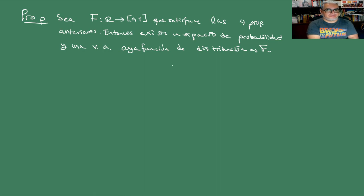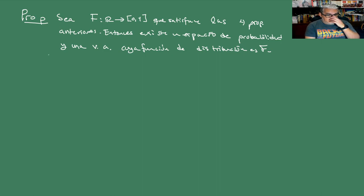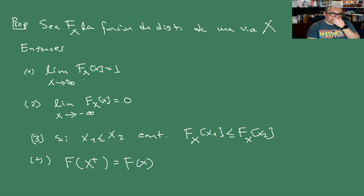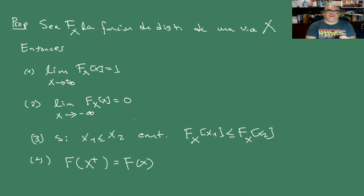¿Cómo haríamos la prueba de esto? Quiero hacer rápido esta observación: si tenemos estas cuatro propiedades, tomando los límites, ¿cómo construimos la variable aleatoria? Podemos construir la variable aleatoria a partir de la F. ¿Cómo lo vamos a hacer? Vamos a integrar. Eso lo vamos a ver un poquito más adelante.